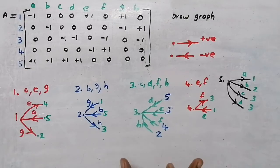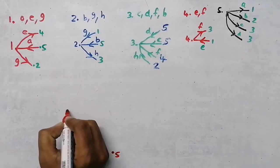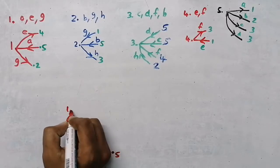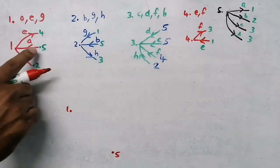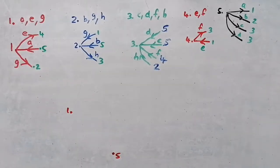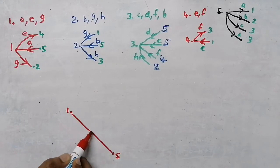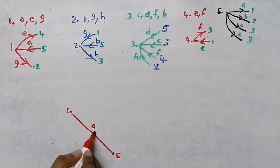Now almost half of the part is completed. I am going to plot node 5 as my reference node. Then I am going to take node 1 and check whether I have a connection with my reference node. I have connection with node 4 and with node 5, and that branch is branch a. So I am going to draw branch a, and the direction is from node 5 to node 1.